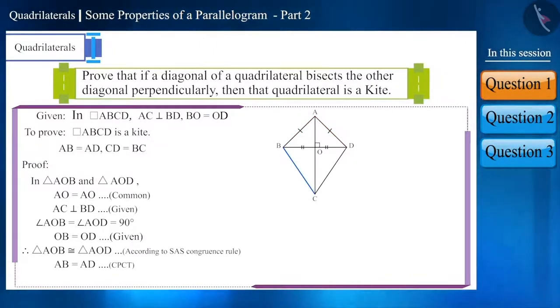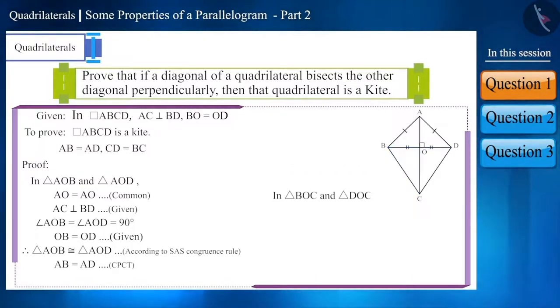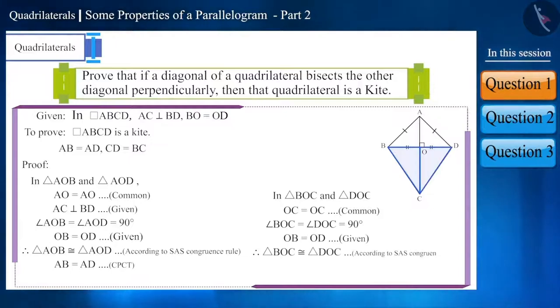Similarly, we can prove side BC to be equal to side CD. Therefore, quadrilateral ABCD is a kite.